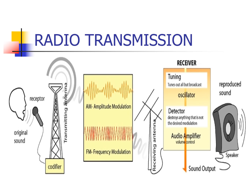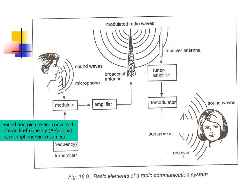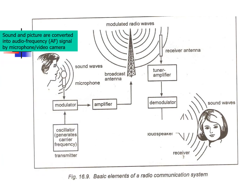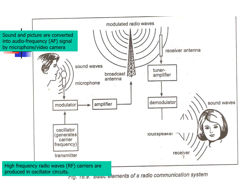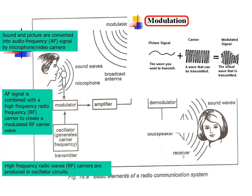How does radio transmission take place? How does a broadcasting station send signals for our favorite programs? First, sound and picture are converted into audio frequency, or AF, signals by a microphone or video camera. High-frequency radio waves, or RF carriers, are produced in oscillator circuits.